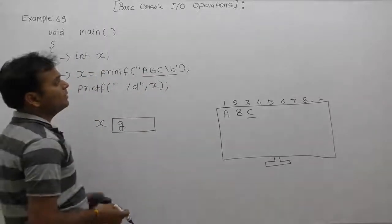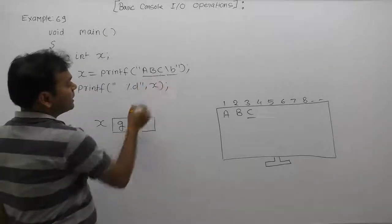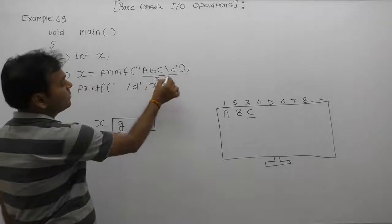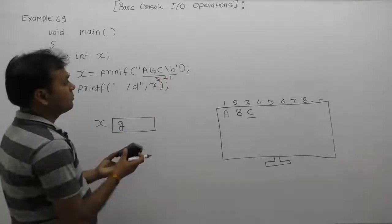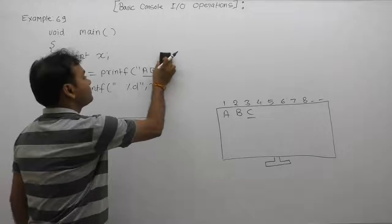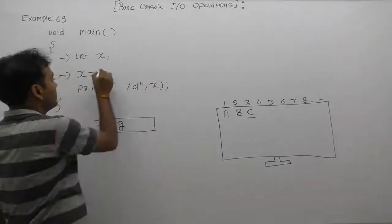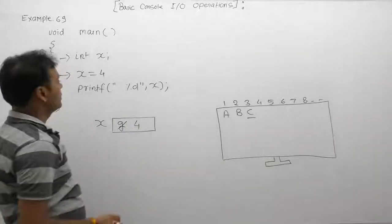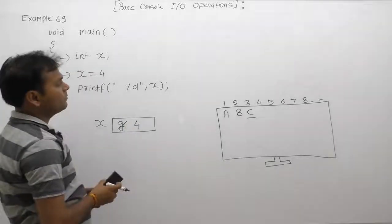Then finally, the printf function will return the number of total available characters inside the format string. The total number of characters is three plus one is four. Therefore it will return the value as four. Now x is assigned by four. According to the next printf, in place of x the value is replaced: x as four.